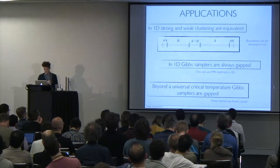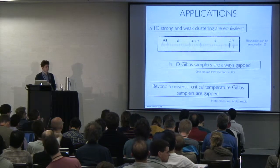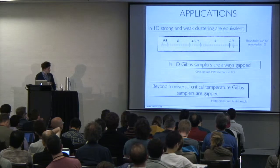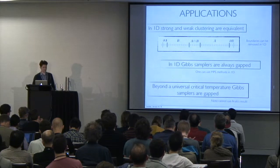And finally, we can also show that above a universal critical temperature, the Gibbs samplers are always gapped. So, these are the settings where it's easy to say something. Of course, the interesting settings are not these ones, oftentimes,